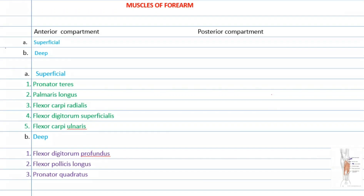If we talk about the muscles of the forearm, there are a total of 20 muscles in our forearm — 8 lying in the anterior compartment and 12 lying in the posterior compartment.